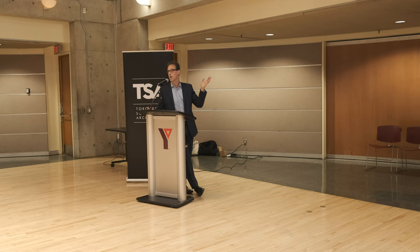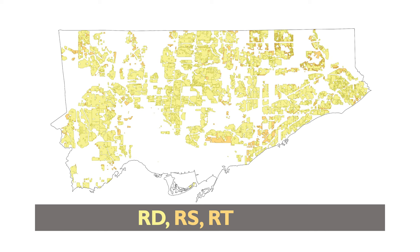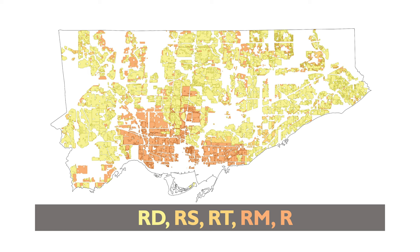That actually underplays it because you're not building housing in parks, employment lands, or utility areas. In terms of what that represents as part of the residential permitted land area of the city, it's over 50%. You could add on the semi-detached residential townhouse zone, and here you have the yellow belt that really exclusively permits single-family home types.